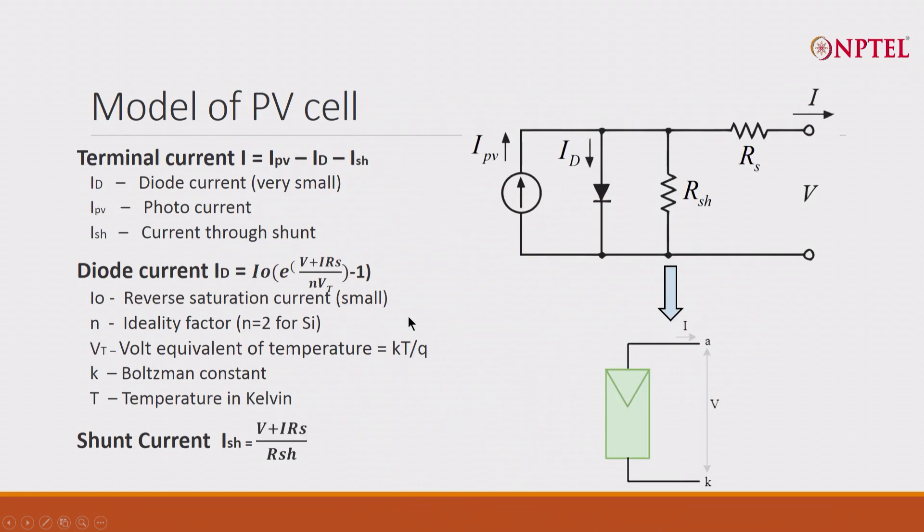Now, where does this come from? This is a typical equivalent circuit. There is a diode current—this is a normal diode current. This is photovoltaic, this is where the light will fall. There is a shunt resistance and series resistance.